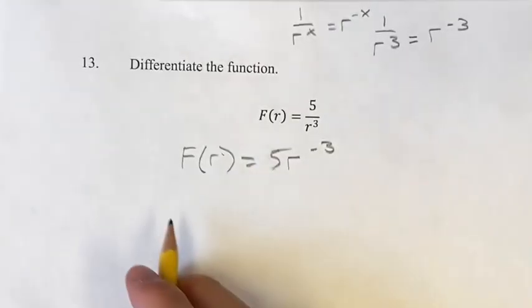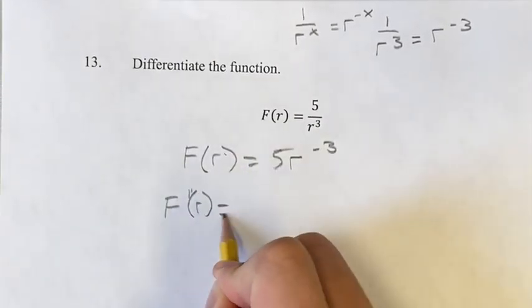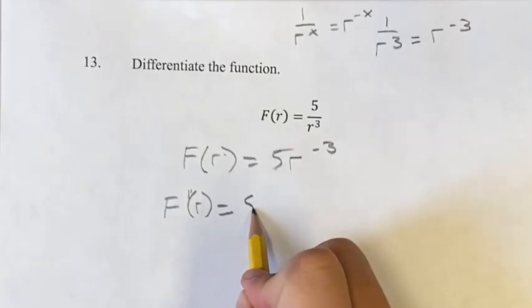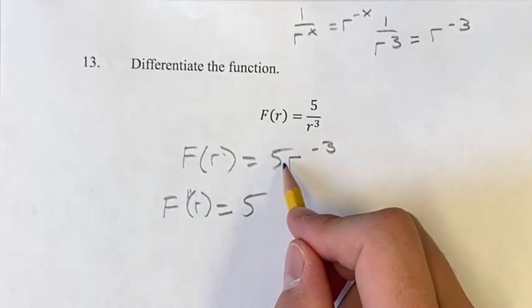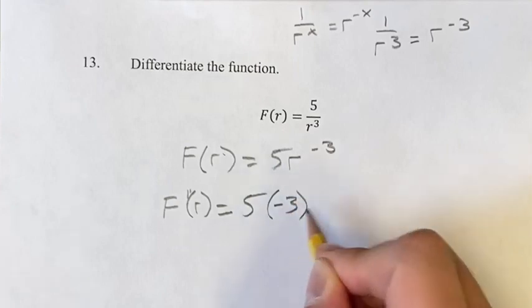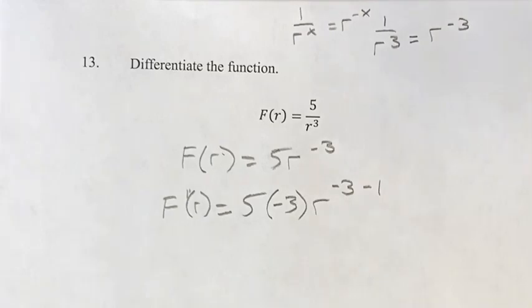And now this is the power function and we can find the derivative easily. So f prime of r is equal to 5. Get the coefficient out front first. Negative 3 we bring down to the coefficient. Then our new exponent, negative 3, which is what we had, minus 1.